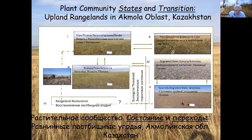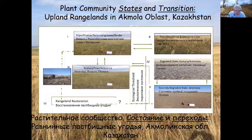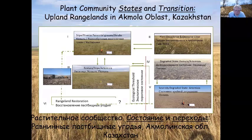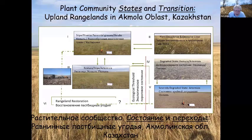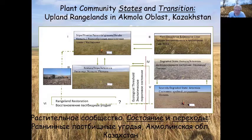The fundamental question is: if you end up in state four or five, can you restore it to a desired plant community with increased livestock production potential? We have seen cases in Kazakhstan where seeding with crested wheatgrass — Agropyron desertorum or Agropyron cristatum — has successfully increased production. However, after seeding with a rangeland drill, you may have to wait one to three years for vegetation to fully establish and become resistant to grazing before you can graze again.